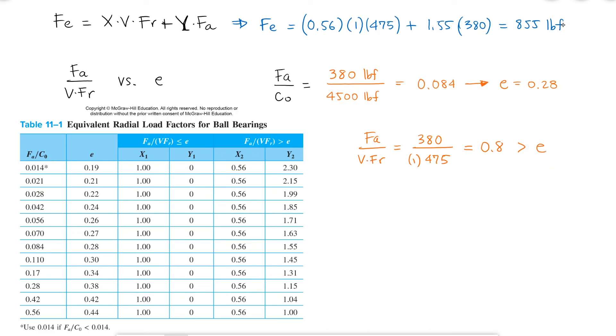Worth pointing out here is that if your value for FA over C0 is not exactly a value on the table, you would need to interpolate to find the values of E, X, and Y. You can find an example where we actually need to interpolate in one of the links of the description of this video.